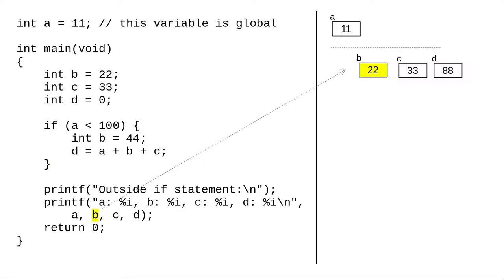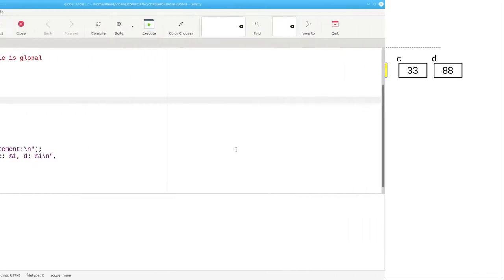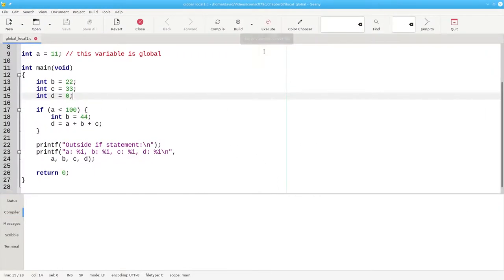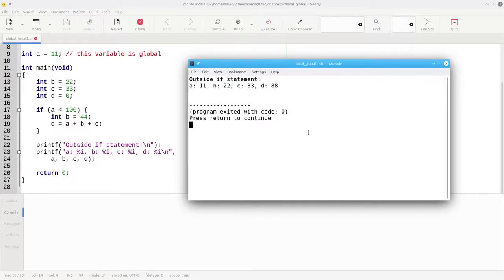Later on in the program, when we print variable B, the only one that exists is the one in the current scope. It will print 22. And when we run the program, that's exactly what happens.